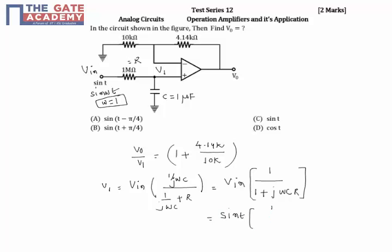This is 1 plus 1 by 1 plus j, where omega is 1, C is 10^-6, and R is 1 megaohm. So this is 1 by 1 times 10^6, so 10^6 gets cancelled. You will have 1 here. So this is sine t.